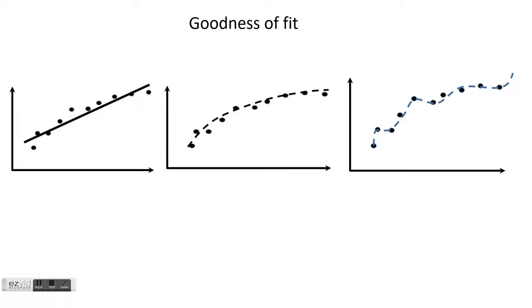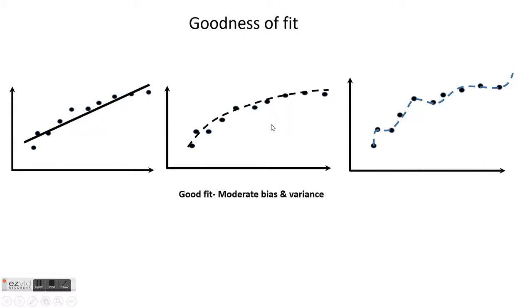Let's assume we have a set of data points shown as black dots. If we draw a straight line it does not fit this set of data points very well because it does not take into account the slightly curved nature of this dataset. Alternatively, the blue line is very wavy and takes into account all variations — this is high variance. The middle curve, probably a second-order curve that goes through all the points, is said to have a good fit. So this is an underfit, this is an overfit, and this is a good fit.